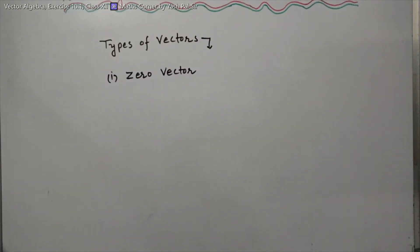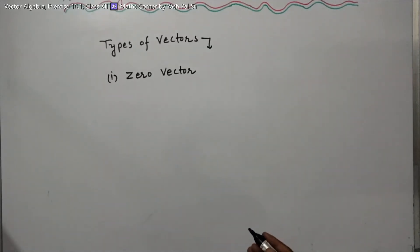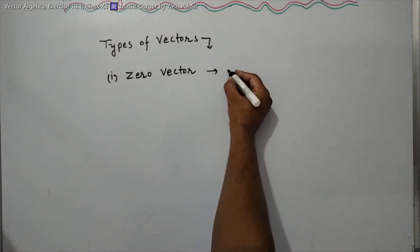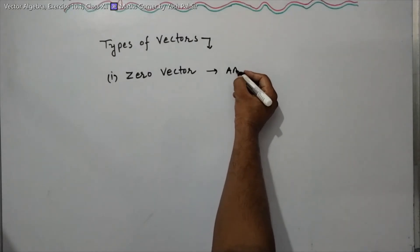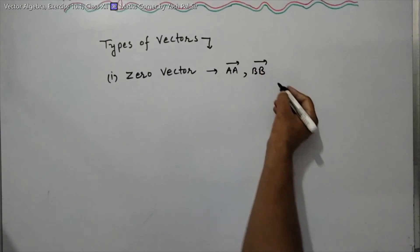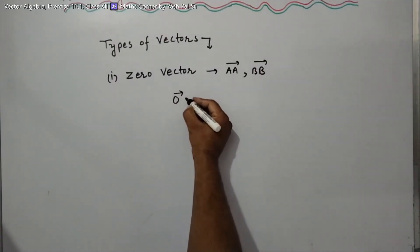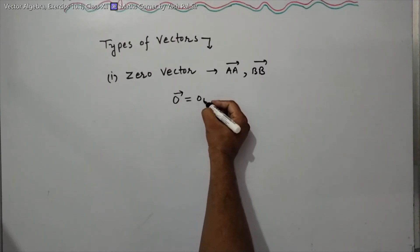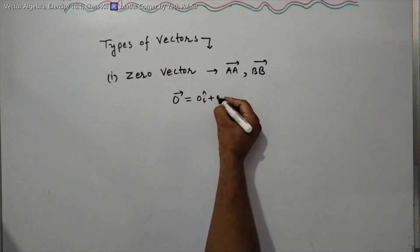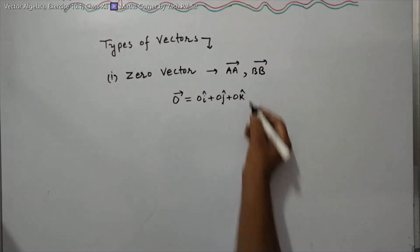Now we discuss types of vectors. The first type is the zero vector — a vector whose initial point and terminal point coincide, such as vector AA or vector BB. In short, the zero vector equals 0i + 0j + 0k.